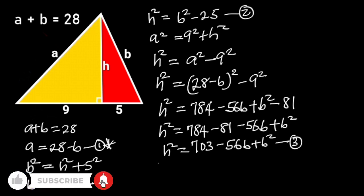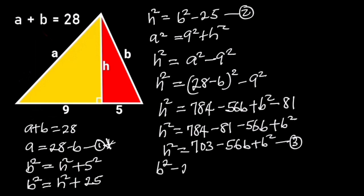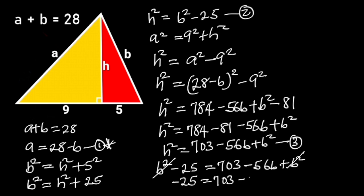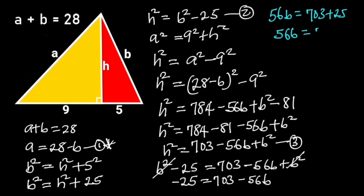Next, let's equate equation 2 and equation 3. Doing so will give us B squared minus 25 equals 703 minus 56B plus B squared. B squared will cancel out, and we are left with minus 25 is equal to 703 minus 56B. Collecting the like terms gives 56B is equal to 703 plus 25. 703 plus 25 is 728, so 56B is equal to 728.